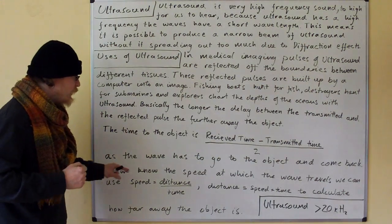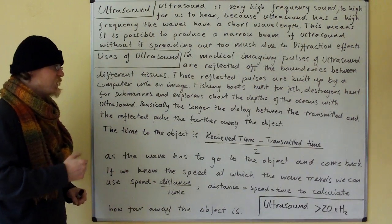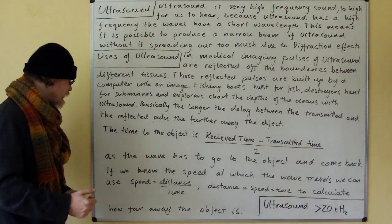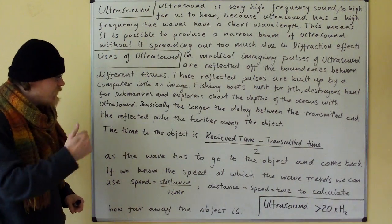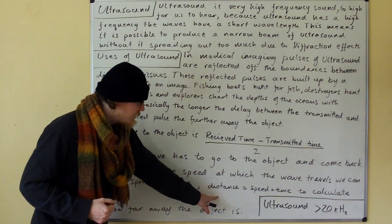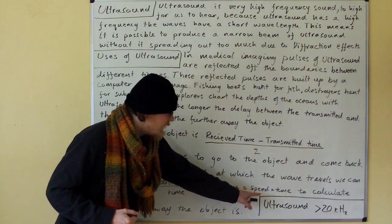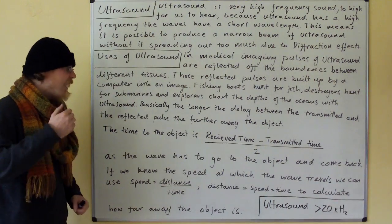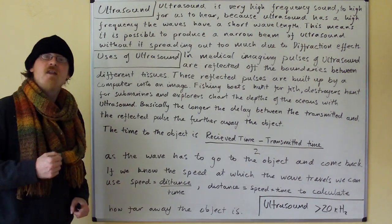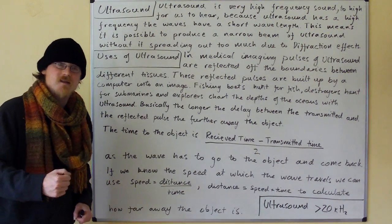If we know the speed at which the wave travels, we can use speed equals distance over time, rearranged into distance equals speed times time, to calculate how far away the object is.